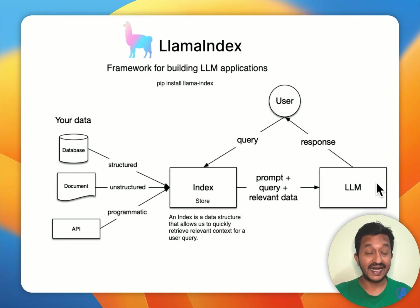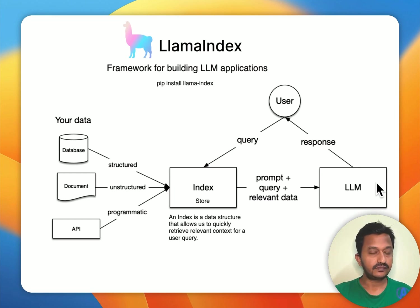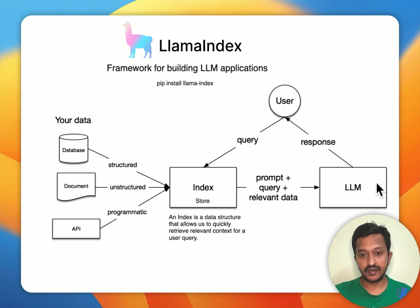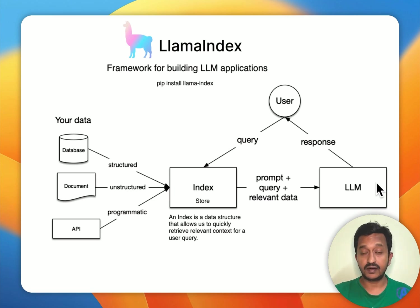The next feature is indexing — LlamaIndex can store and index data for different use cases. After that, there is data querying: it can orchestrate production LLM workflows over data, including prompt chains, RAG, and agents. And the next one is evaluation — LlamaIndex can help developers evaluate the performance of their LLM applications with a wide variety of modules.